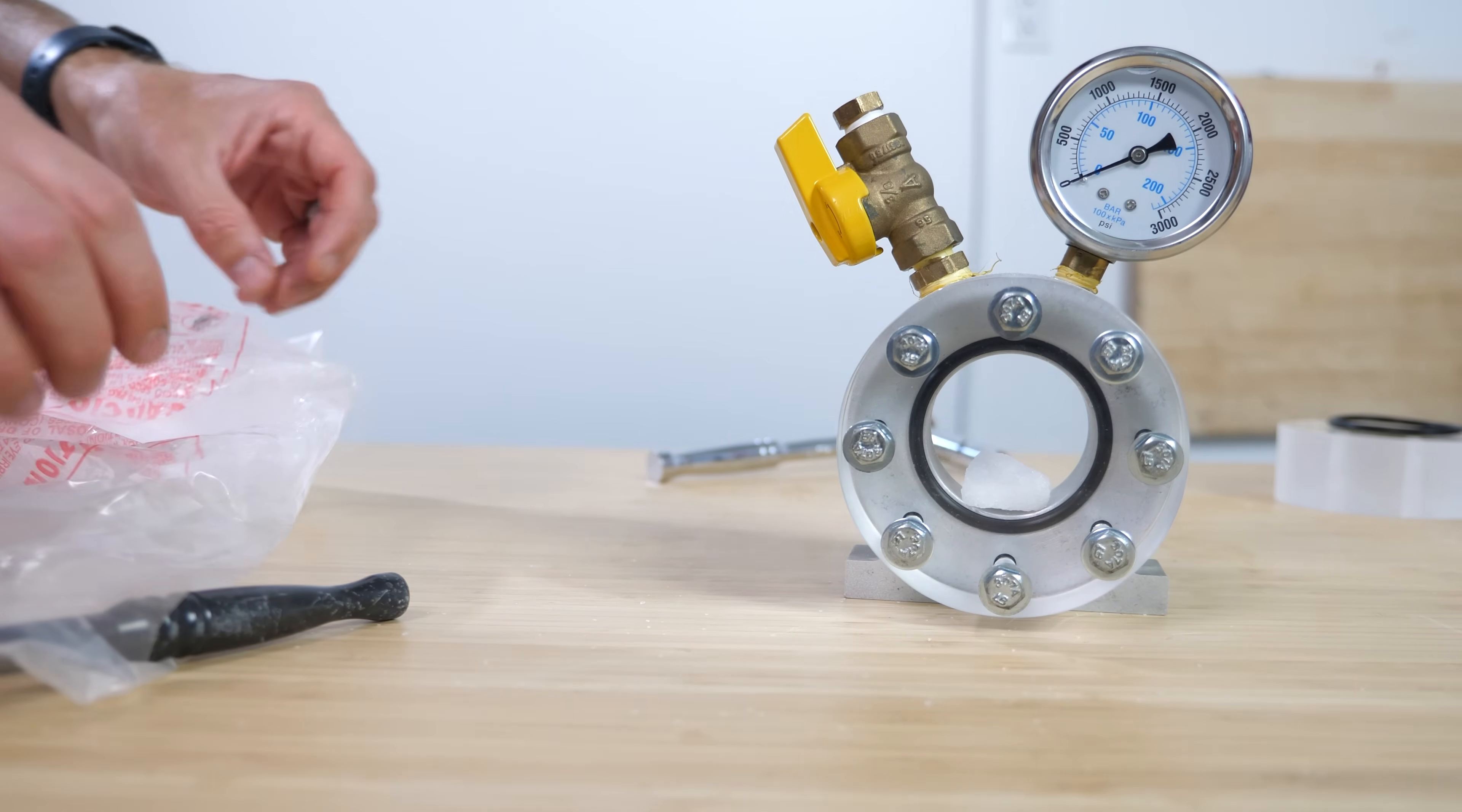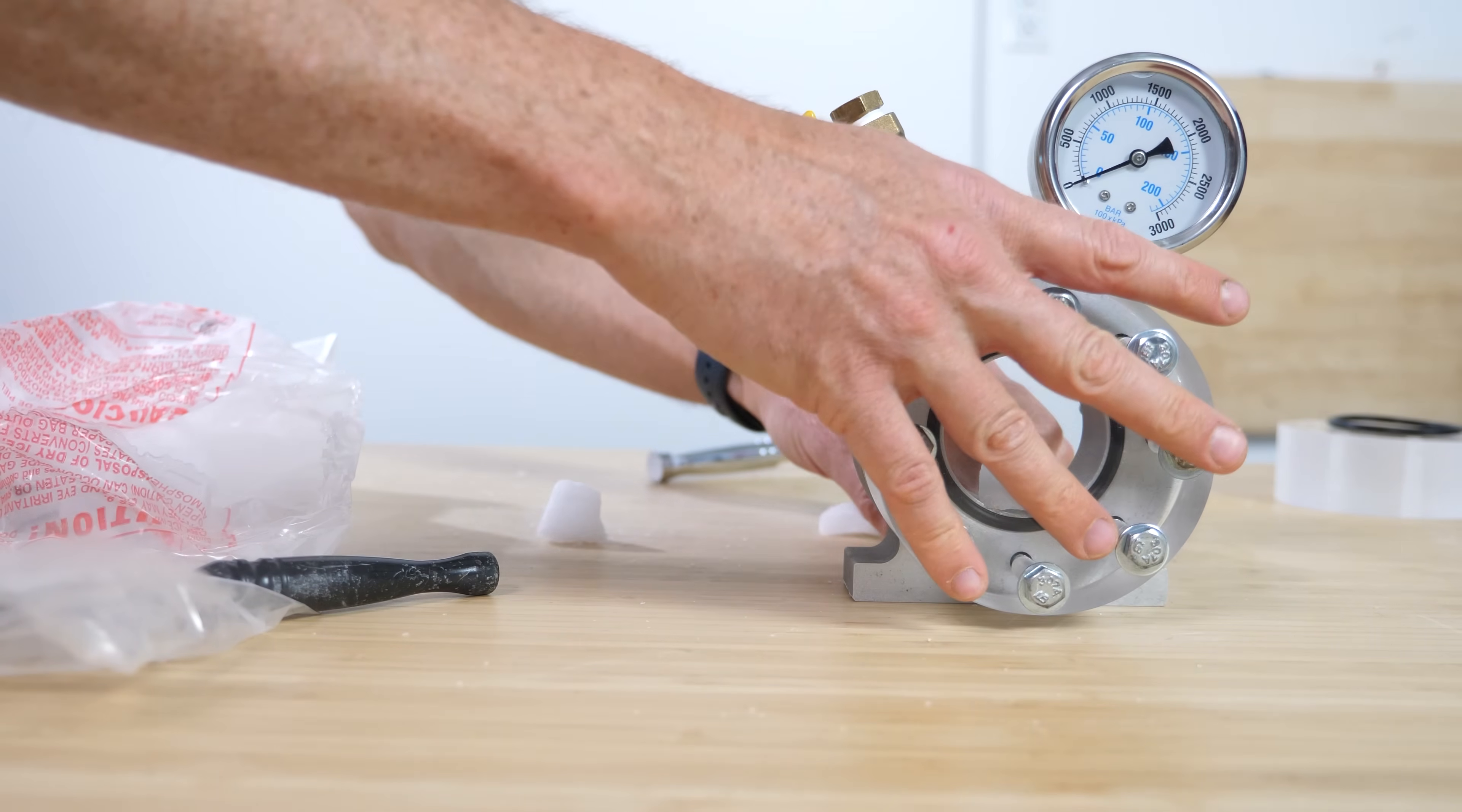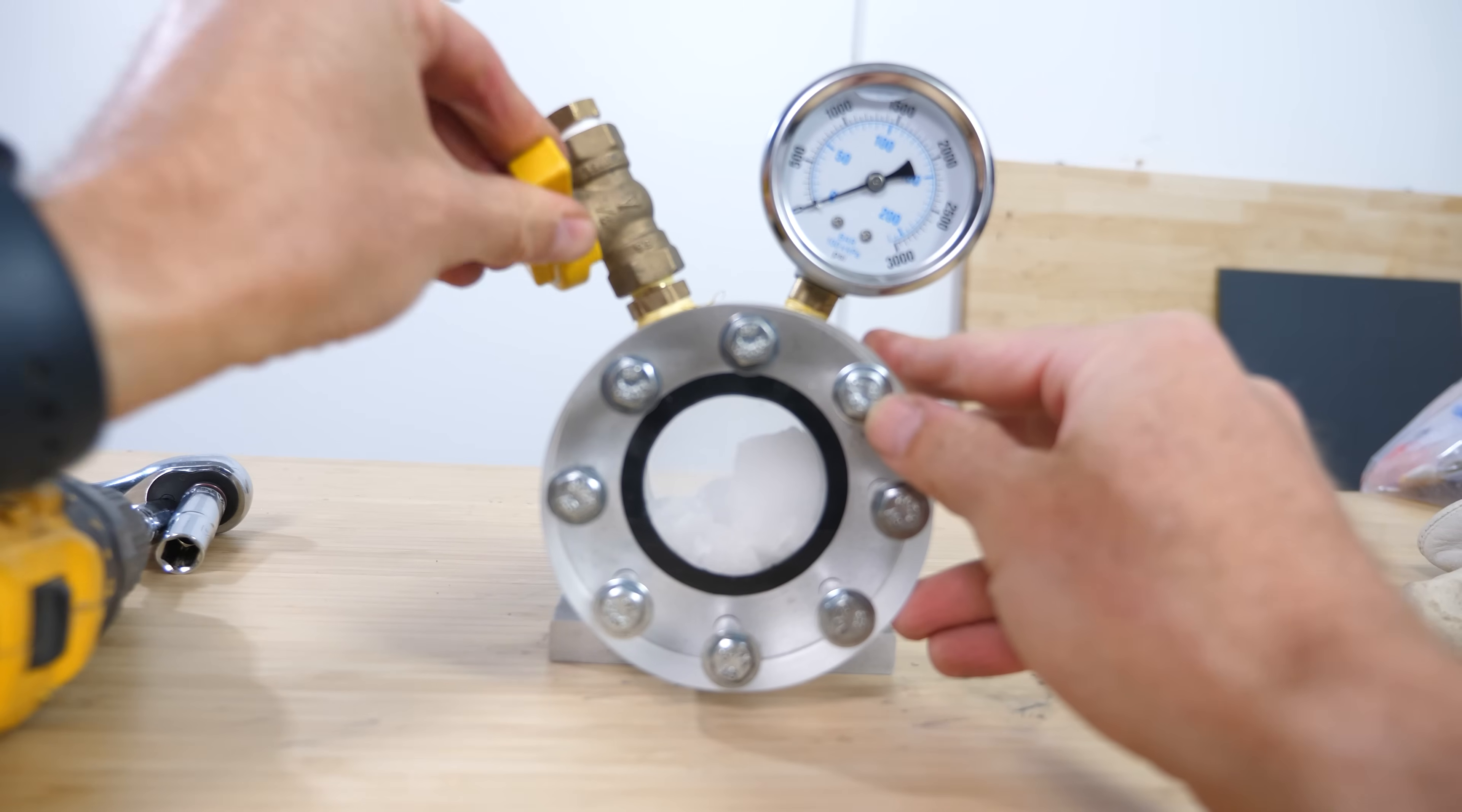So to start off, we need some CO2. When it's solid, we call this dry ice. So I'll just grab some chunks of dry ice and put it in the vessel. Now I'll tighten these bolts and then close the valve.